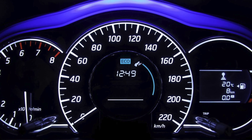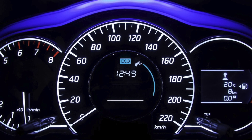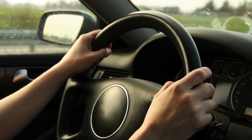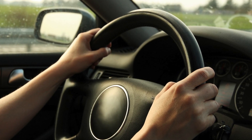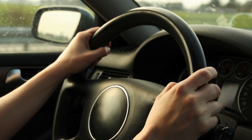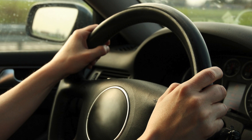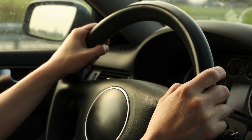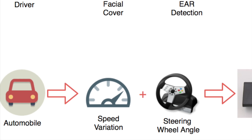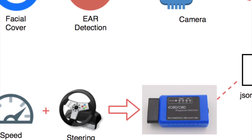So we combine it with the facial reactions captured through our camera. We perform an A and B analysis — A is your EAR value and B is your speed. The next parameter is steering angle: if the person is drowsy, the steering wheel is not going to move as often as it would when the driver is very active. These two parameters are collected and sent to the server.